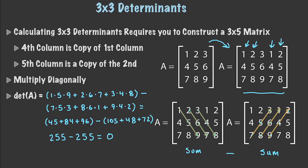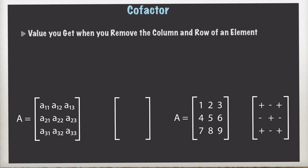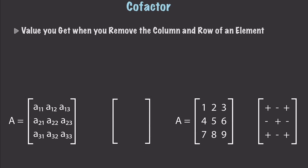Hopefully you understand determinants. Don't worry if you haven't 100% got them because they will be brought up again in future videos — they are extremely valuable. First, however, I want to talk about a cofactor. A cofactor is just the value you get when you remove the column and row of a designated element in a matrix, and then with what is left you go and find the determinant.